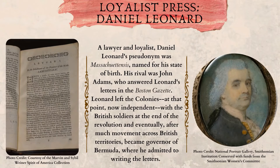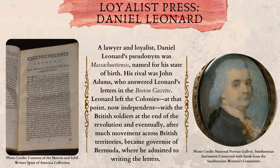Loyalist Press: Daniel Leonard. A lawyer and loyalist, Daniel Leonard's pseudonym was Massachusetts, named for his state of birth. His rival was John Adams, who answered Leonard's letters in the Boston Gazette. Leonard left the colonies, at that point now independent, with the British soldiers at the end of the revolution, and eventually, after much movement across British territories, became governor of Bermuda, where he admitted to writing the letters.